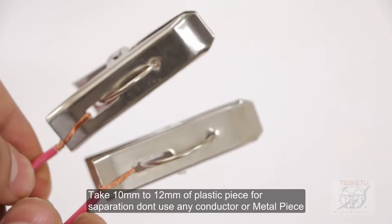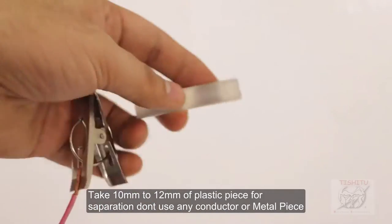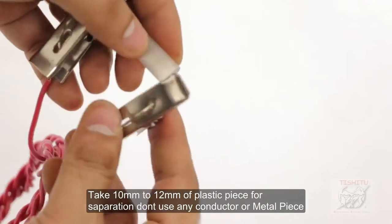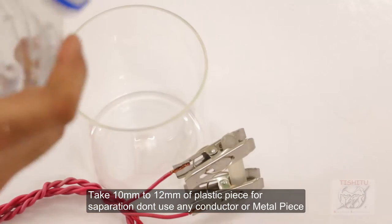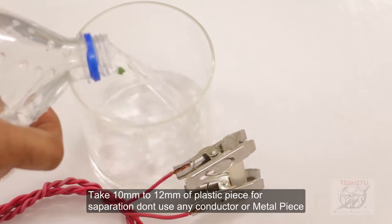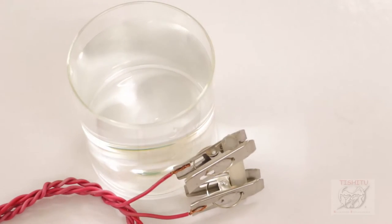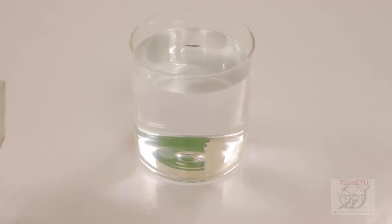Okay, put some piece of plastic or a roll having this diameter and keep these two clips on them. Put some water in a beaker and dip these two clips in the beaker.